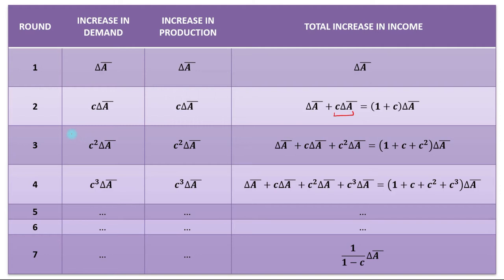Again, a fraction MPC of the increase in income from the second round will be spent on consumption, so aggregate demand will rise by that term. To meet the increase in demand, production has also to be increased by the equal amount, and the total increase in income of these three rounds will be change in A-bar plus MPC times change in A-bar plus MPC squared times change in A-bar.